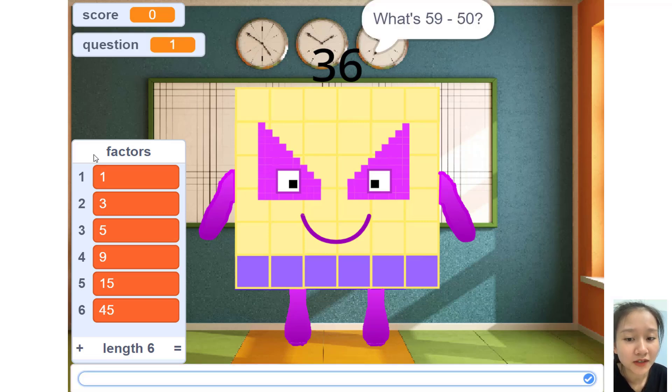What is 59 subtraction 50? Equal is 9. What is 20 plus 89? Equal is 108. No, 109.